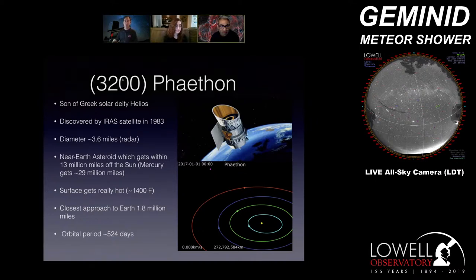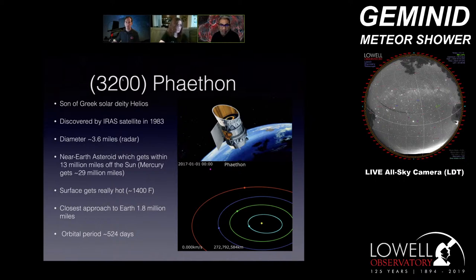So 3200 Phaethon — this is the object we're going to learn about today. The number 3200 is the order in which this asteroid has been numbered. Whenever you discover an asteroid, you get a provisional designation. Over the course of many years, as you get more observations and the orbit becomes clear, the Minor Planet Center designates it and gives it a number. Phaethon is named after the son of the Greek solar deity Helios — there's some mythology associated with that name that you can look up on Wikipedia.